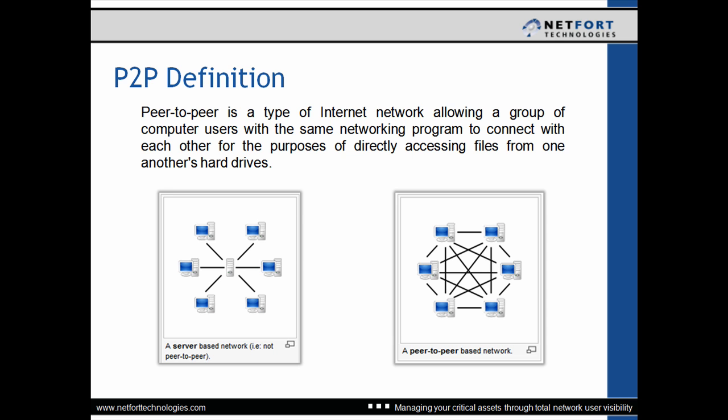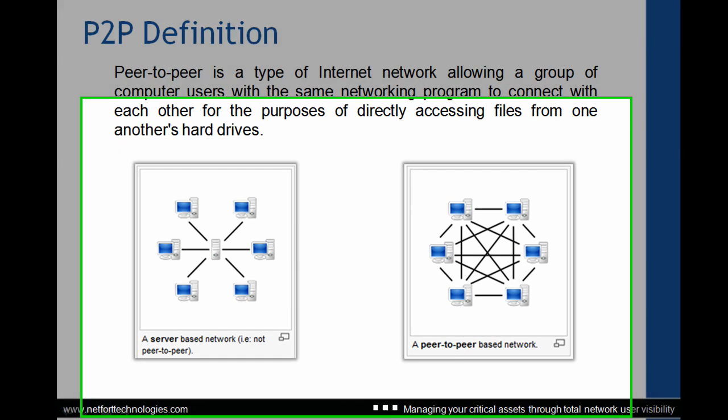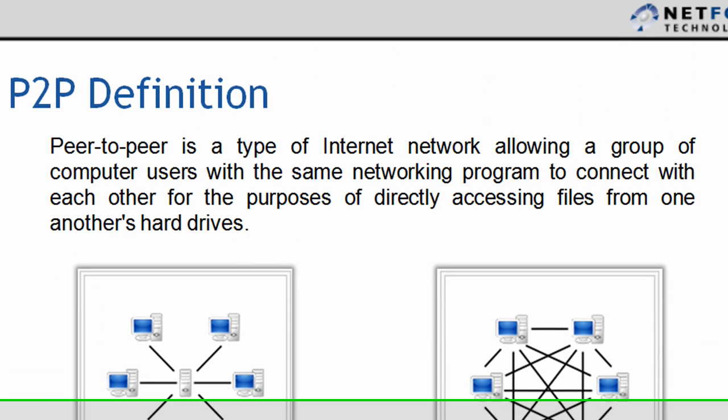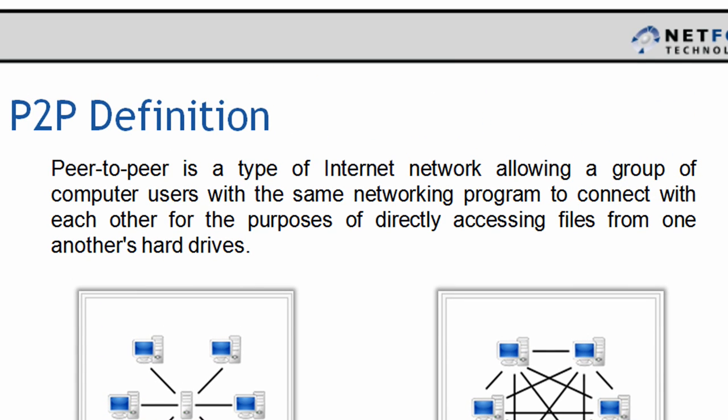First, the peer-to-peer definition. We're going to focus on these two diagrams at the bottom. In the past we were used to a setup where clients connect to a central server and share files stored there. However, in a peer-to-peer network there is no central location — instead, files and pieces of files are shared directly amongst clients.